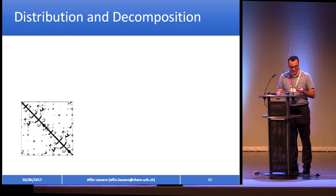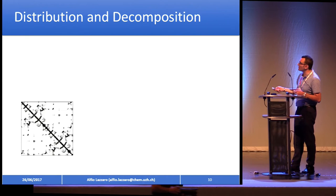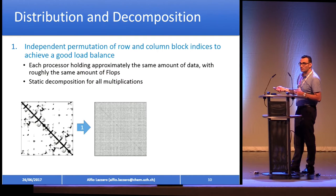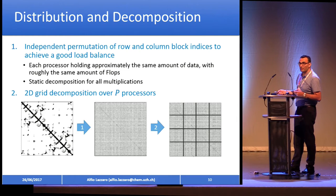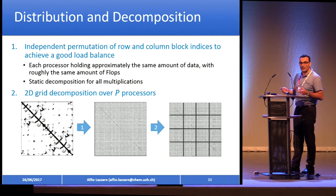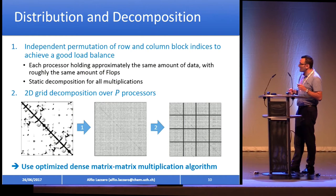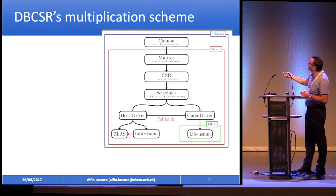Let's see how DBCSR works. We start with the standard sparse matrix. Then we randomize rows and columns to get a flat distribution of blocks. We then distribute this in a 2D grid over processors — this is a 4×4 case — and at this point you have a flat distribution of blocks, meaning also computation. You can then apply an efficient dense algorithm for your evaluation. We used to have the Cannon algorithm for this multiplication.